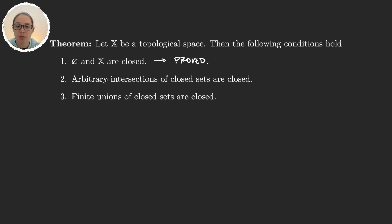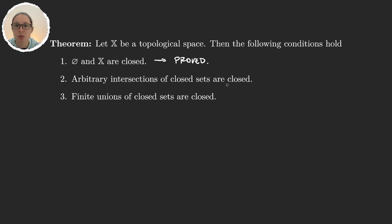Then it says that arbitrary intersections of closed sets are closed. If you go back to the definition of a topology, we have that arbitrary unions of open sets are open, because arbitrary unions of elements in our topology — the open sets — are open sets. Here we have intersections, so we are changing unions for intersections and open for closed.